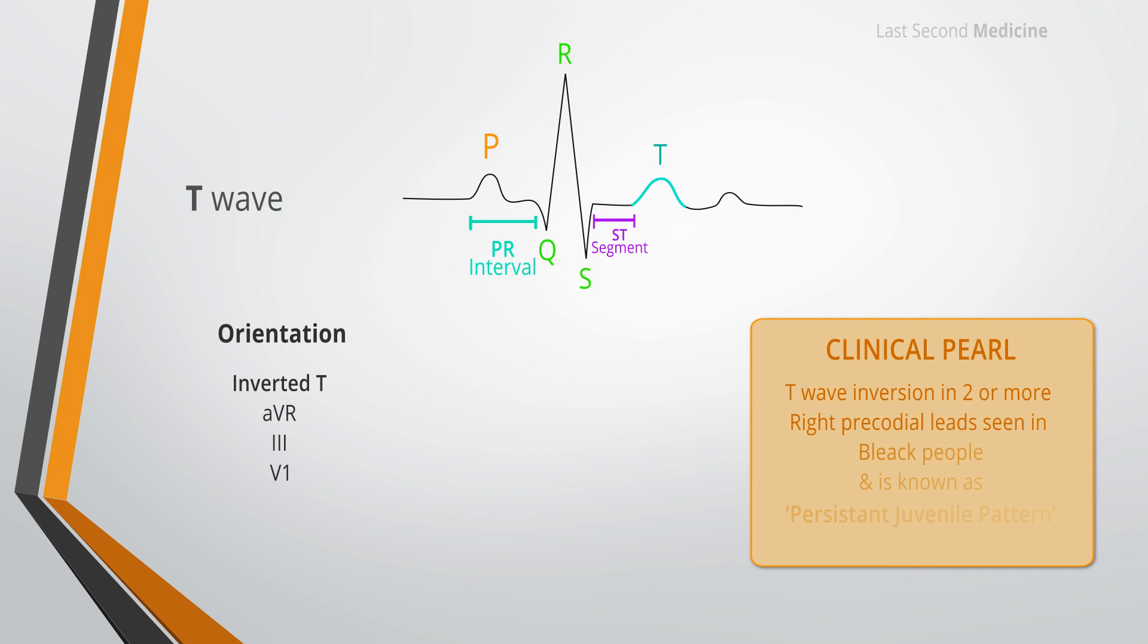T wave inversion in two or more of the right precordial leads is known as persistent juvenile pattern. It is more common in black people. The presence of symmetrical inverted T waves is highly suggestive of myocardial ischemia, though asymmetrical inverted T waves are frequently a non-specific finding.